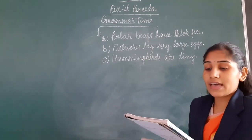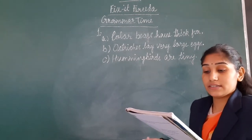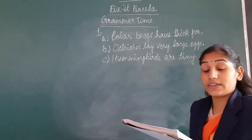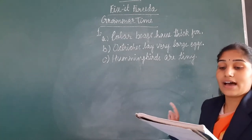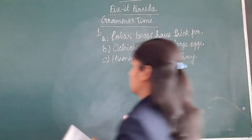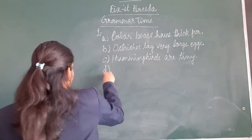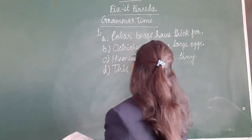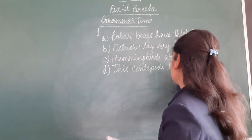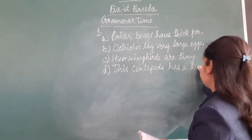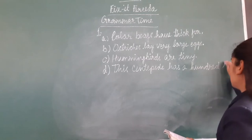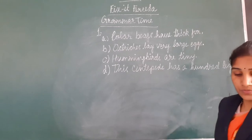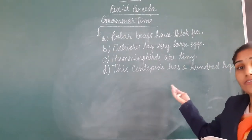Part D: 'What has centipede this legs a hundred?' We can arrange these words as: This centipede has a hundred legs. Write down the answer and end it with a full stop. So children, after doing question number 1, we will move to question number 2.